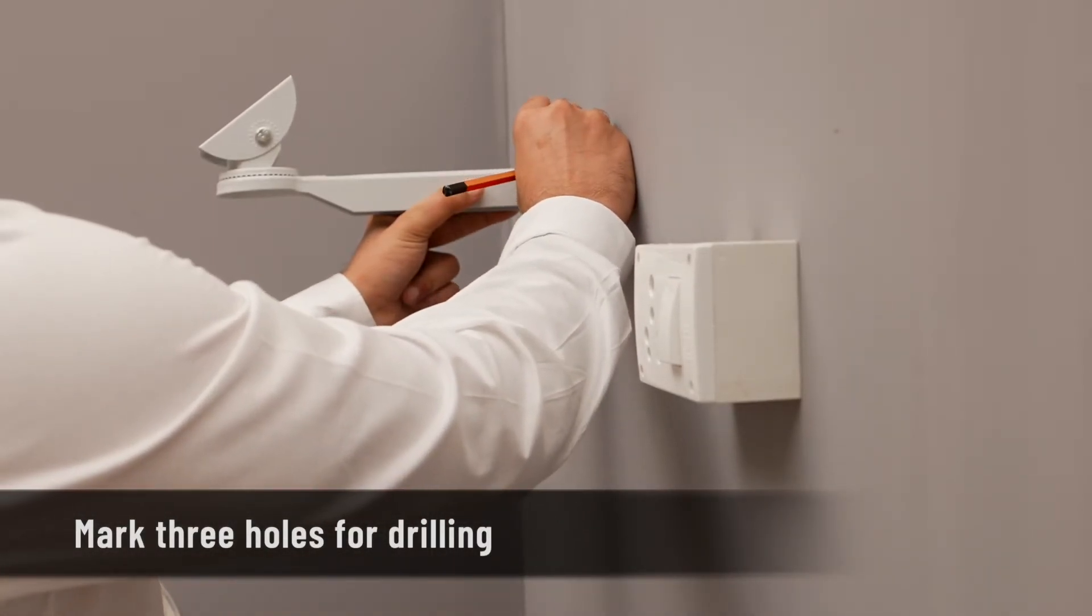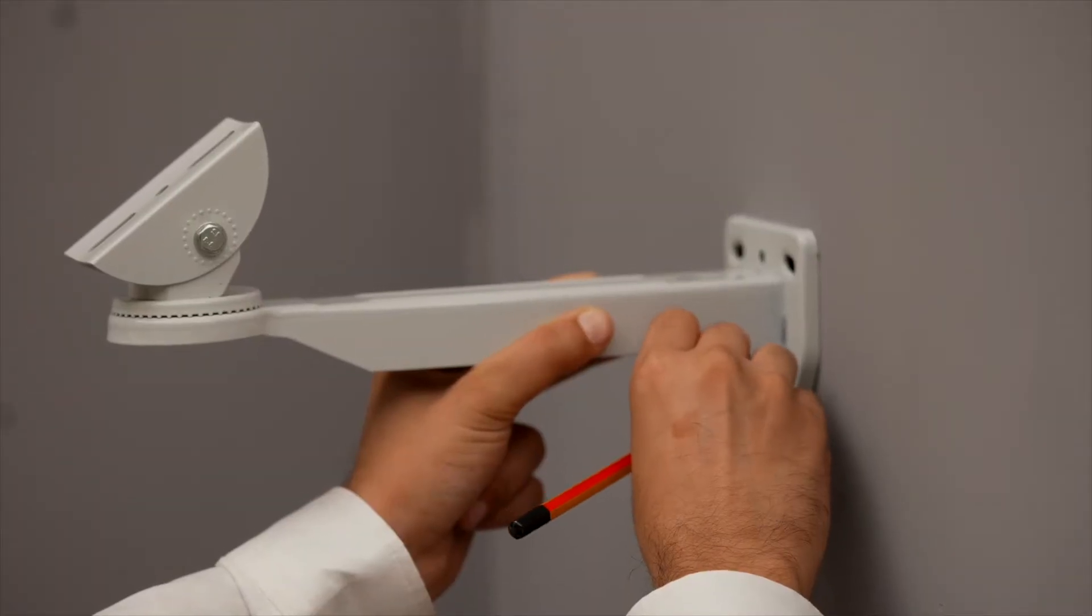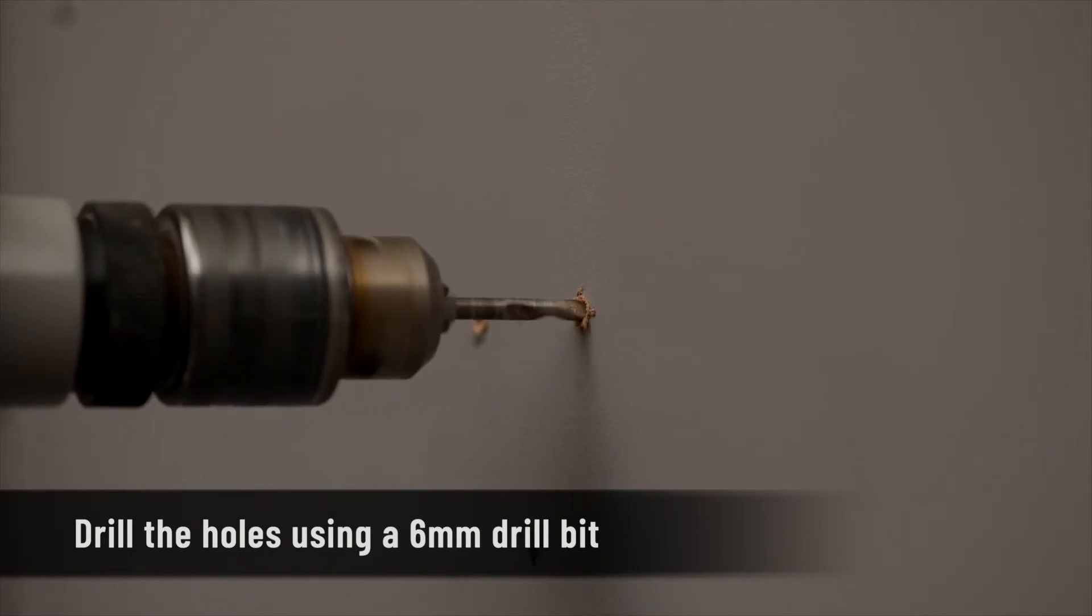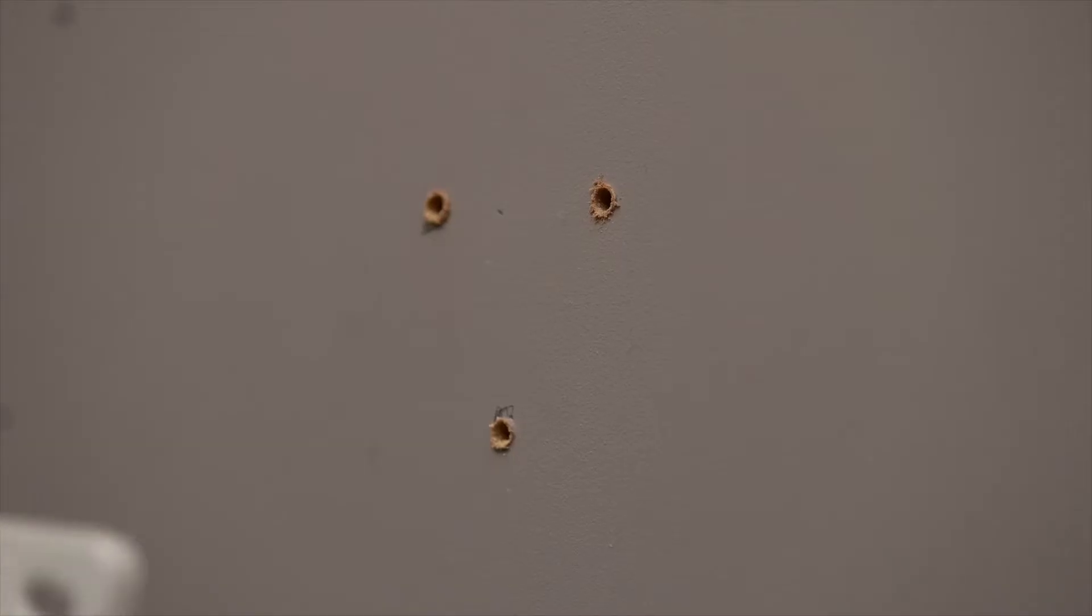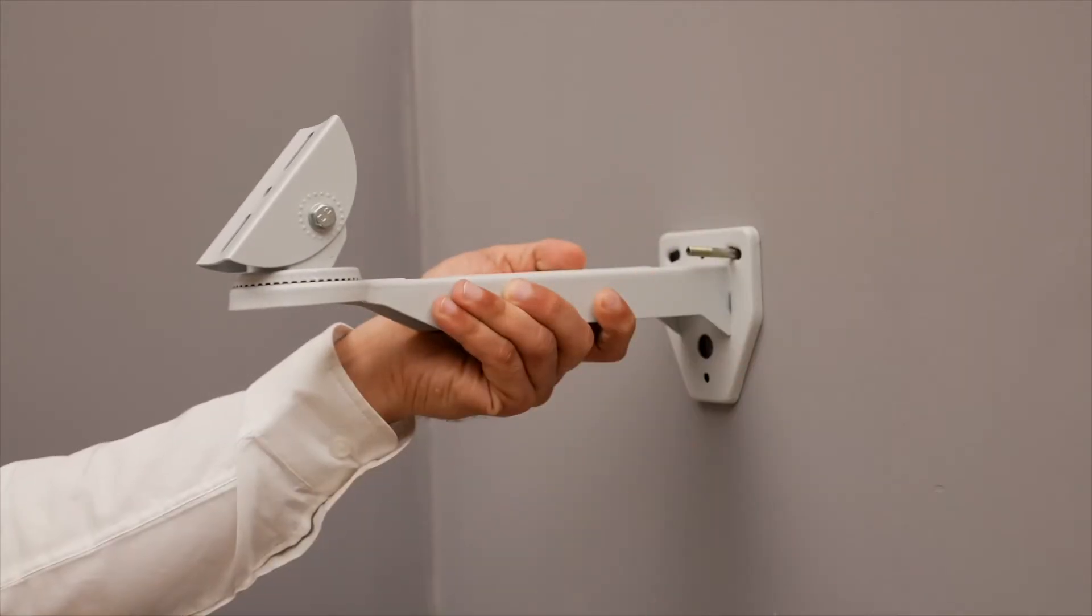With an electric drill, drill the holes at the marked location using a 6mm drill bit. Position the bracket over the drilled holes in such a way that the device stands on top of the bracket.